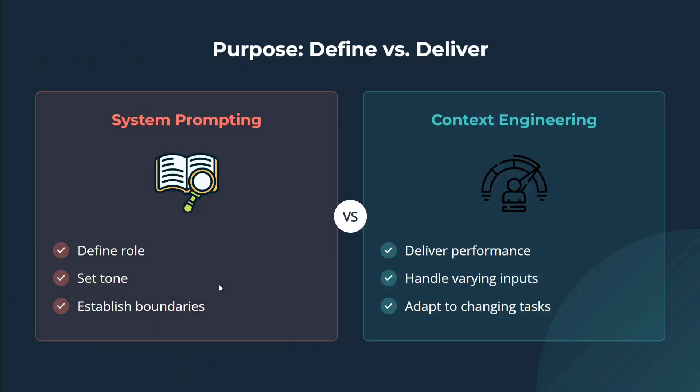Purpose — define versus deliver. A system prompt defines your role, sets the tone, or establishes boundaries — what can't be done. While in the case of context engineering, it delivers performance and handles varying output. If the user is not in this mode, then you should do this; if the user has been like this for five years, you should manage yourself accordingly — adapt to the changing task. Once you provide the context about a user, all the prompting follows it, while system prompting is more of the rule side of things.